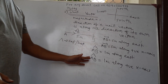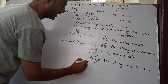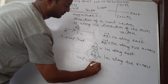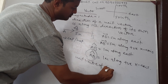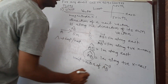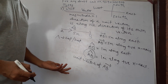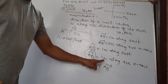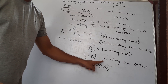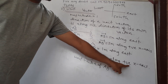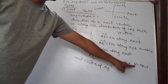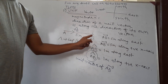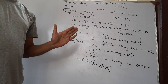AB-hat is the unit vector of vector AB. Its direction is along positive x-axis or east, which is the same as the direction of vector AB. So the unit vector of any vector is always directed along the direction of that same vector.